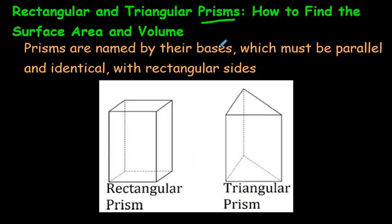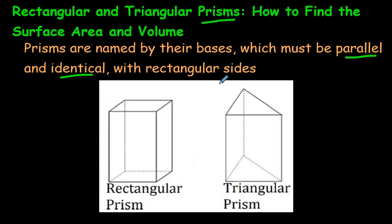Prisms are named by their bases. So we see the base here — on this particular one it's called a rectangular prism because we have a rectangle at the bottom and at the top. They have to be identical and they have to be parallel. The vertical sides on both of these are rectangles.